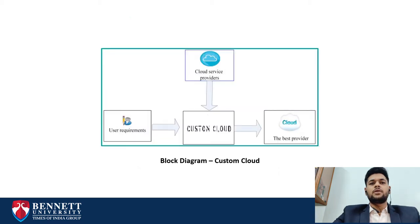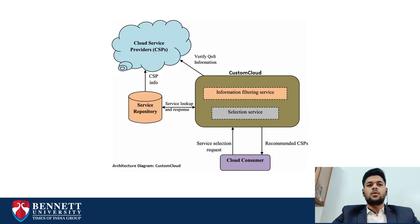Here is a block diagram that describes the functionality of Custom Cloud. It detects the user's requirements as an input and the data from cloud service providers and gives the best provider as an output based on user requirements. Looking into the architecture of Custom Cloud: first, a cloud customer requests a service selection, which then goes into the Custom Cloud algorithm, which filters the information and does the cloud service selection on the basis of different MCDM methods and a hybrid algorithm. Then the information on quality of service is verified from the cloud service providers and the best CSP is recommended to the cloud customer.